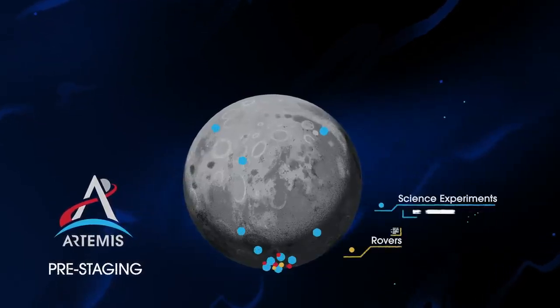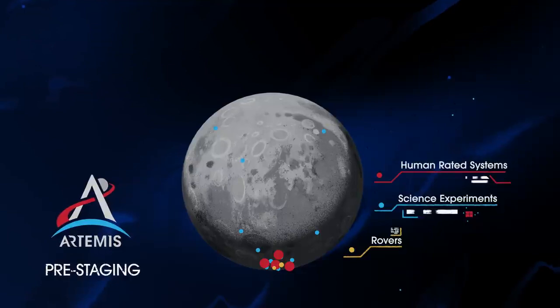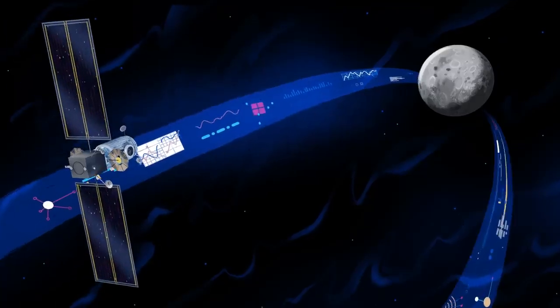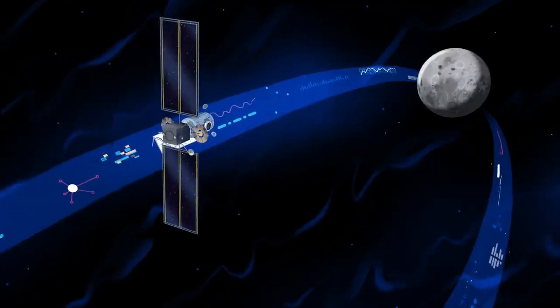Everything needed for lunar missions will be positioned in advance by commercial and international partners. This includes rovers, science experiments, and human-rated systems on the surface. But it also includes a dedicated lunar station in orbit around the Moon called Gateway.